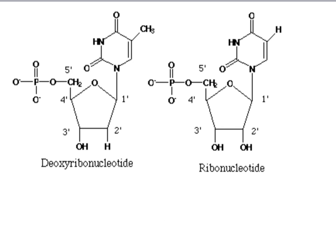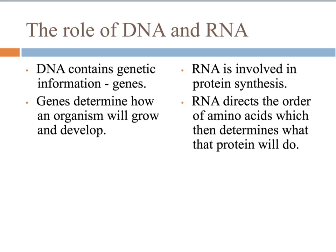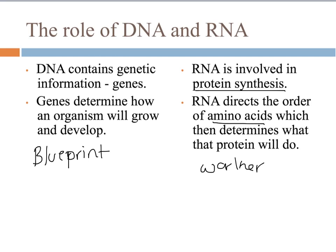This slide shows the difference between these two polymers of nucleic acids — DNA and RNA. The roles of these have been talked about in class. DNA contains the genetic information, or the genes, and determines how organisms grow and develop. RNA is the worker: if DNA is the blueprint that holds the information, RNA carries out the work. RNA takes information from the DNA out into the cytoplasm of the cell and makes proteins — that's called protein synthesis. It determines what amino acids come together and therefore what protein will be produced.